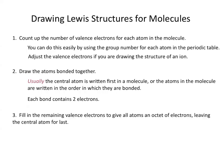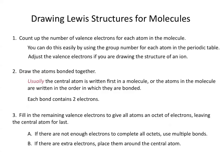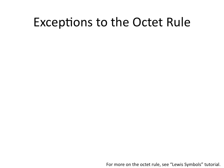Thirdly, you need to fill in the remaining valence electrons to give all of the atoms in your structure an octet of electrons, leaving the central atom for last. If you go to fill in the octet for the central atom and don't have enough electrons left, that often means the structure contains a double or triple bond. If there are extra valence electrons, we'll place them around the central atom, which means it would have more than an octet — and so there are some exceptions to the octet rule.